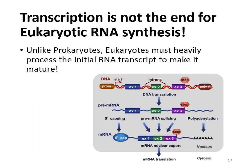Gene expression is not the end for eukaryotic RNA synthesis. Another difference between prokaryotes and eukaryotes is that eukaryotes do a whole lot of processing of their RNA in order to make it mature and usable. Some of the processing you need to know includes: eukaryotes will add a 5' cap, a poly A tail, and splice the RNA.